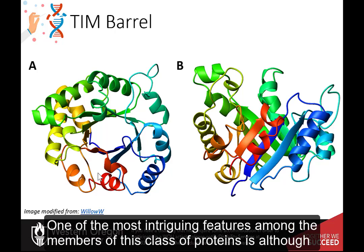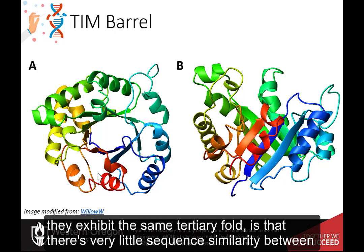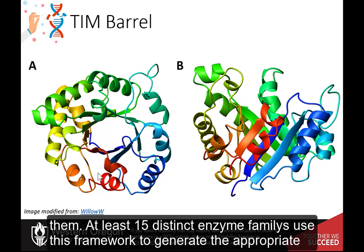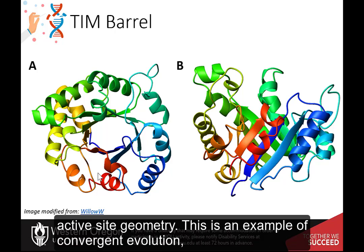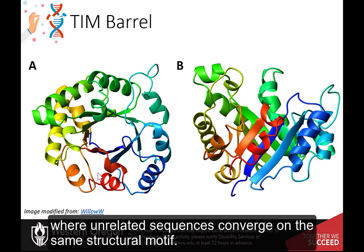One of the most intriguing features among members of this class of proteins is that, although they exhibit the same tertiary fold, there is very little sequence similarity between them. At least 15 distinct enzyme families use this framework to generate the appropriate active site geometry. This is an example of convergent evolution, where unrelated sequences converge on the same structural motif.